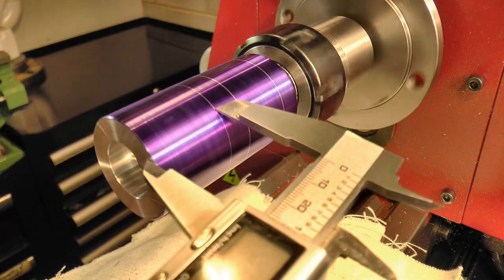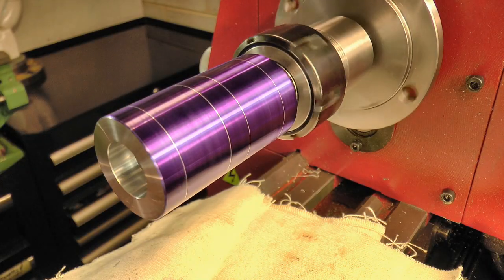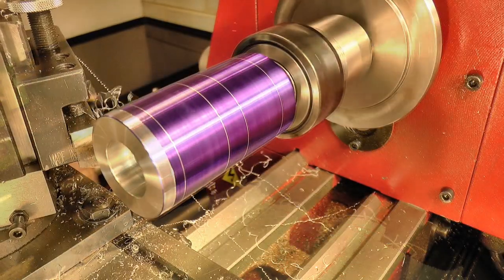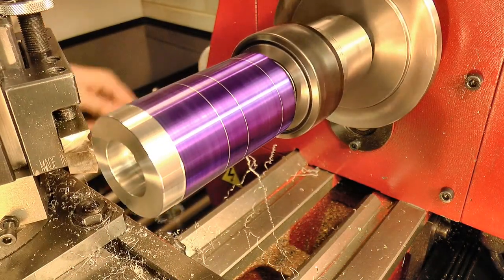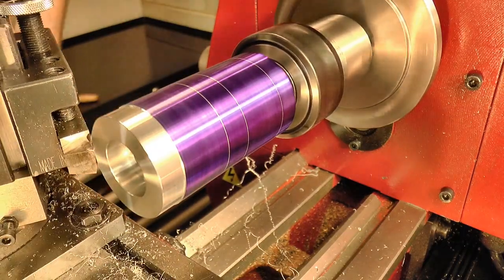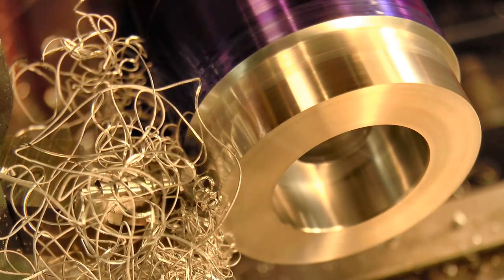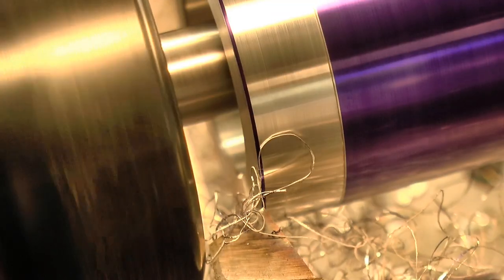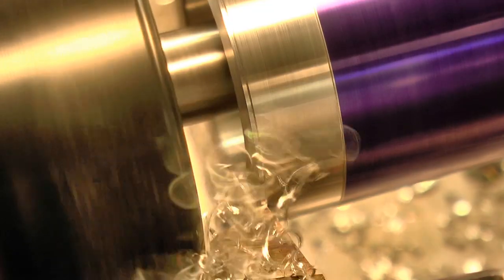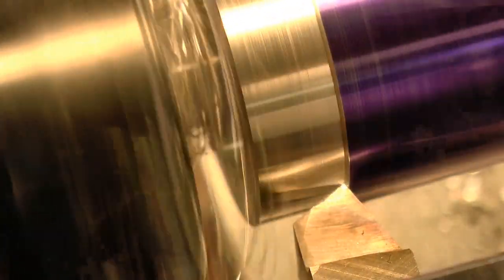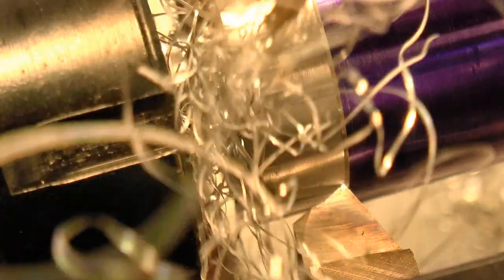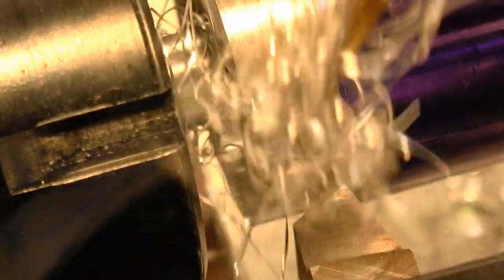Next I marked out and cut the outside profile. You can see the work is hanging out from the chuck a little more than it should be, and I probably should have given it a bit of tailstock support, but I kept the cuts light and it worked out fine. Here's one small drawback of stub arbors, they're an absolute magnet for long chips.